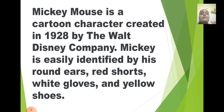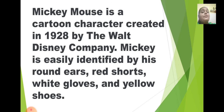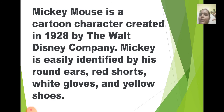Have you understood? See, in the first two to three lines I have introduced the character — that Mickey Mouse is a cartoon character created in 1928 and who made Mickey Mouse — the Walt Disney Company. So here I have introduced the character. And the next sentence I have described his physical qualities. Mickey Mouse is easily identified by his round ears, red color shorts, white color gloves in his hand and yellow color shoes. So this is his physical appearance.